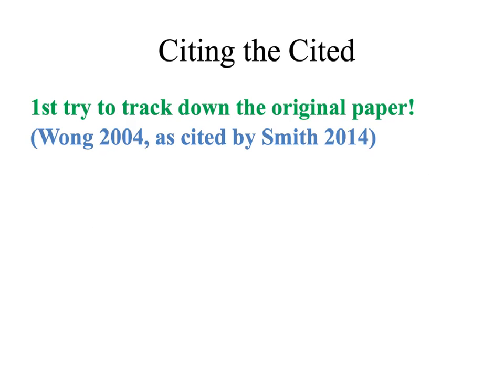You may want to cite something that is cited in another paper, but you don't have the original paper. First, try to track down the original citation. Ask a librarian for help if you're having problems with that. And if we can't get it in time, then you can use this method: Wong, 2004, as cited by Smith, 2014.